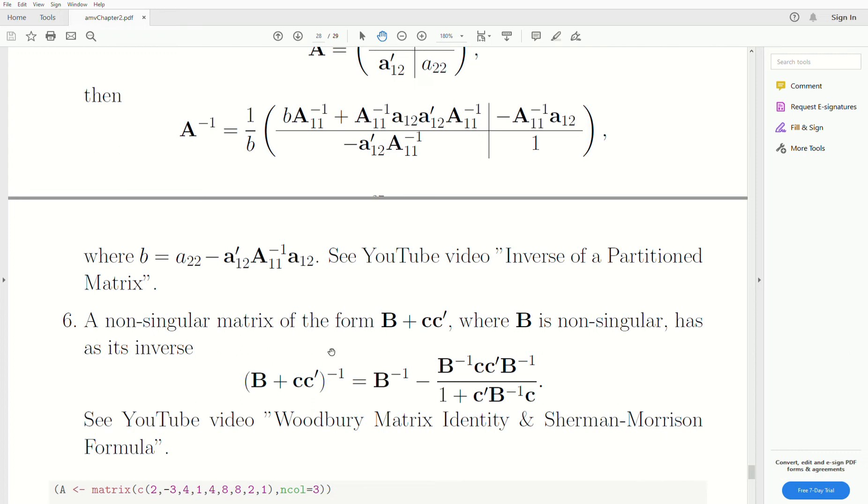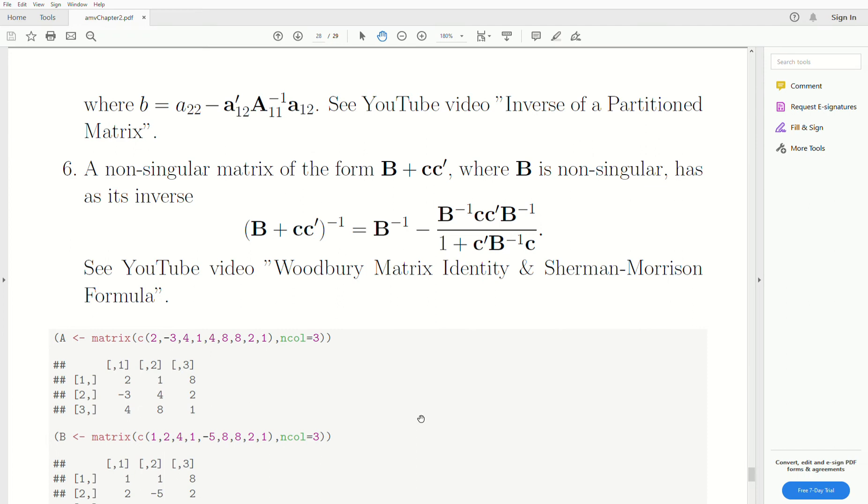Now this is the Sherman-Morrison Formula, and it's a specific case of this Woodbury Matrix Identity. Anyway, if you're interested, you can go there. Otherwise, you'll have to wait to a later lecture.